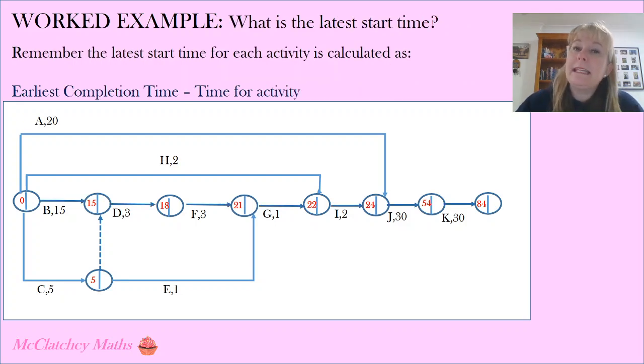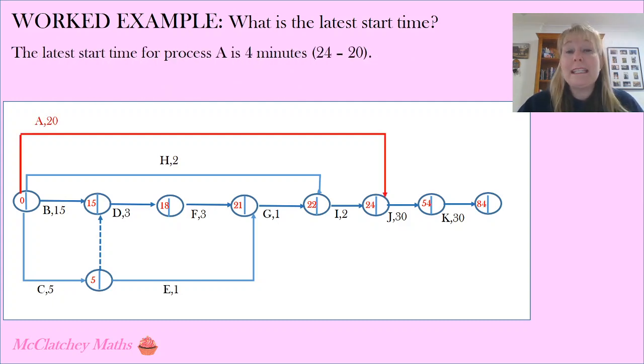Now I'm asked to find the latest start time for each of my different activities. Remember once again these are for activities not on the critical path. And I calculate this as earliest completion time take away the time for the activity. Now remember the earliest completion time is always going to be 84 minutes. We calculated that earlier on in the video. So the latest start time for process A is going to be 4 minutes. 24 take away 20. The latest start time for process C is 10 minutes. 15 take away 5. This is 10 minutes into the overall process. The latest start time for process E is 15 minutes. 21 take away 6. And the latest start time for process H is 20 minutes. 22 take away 2.